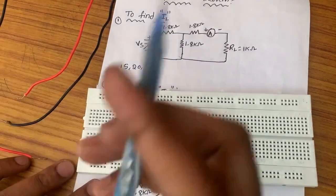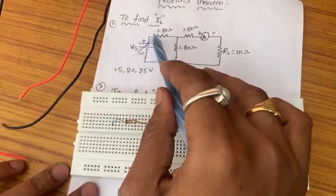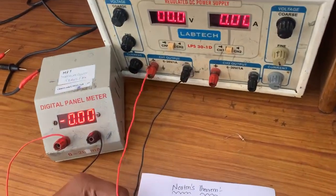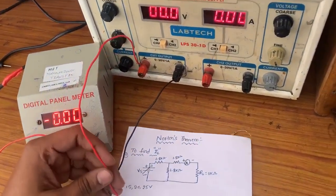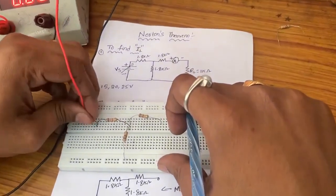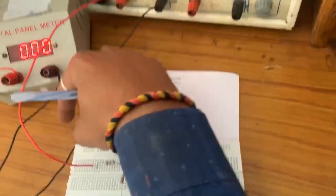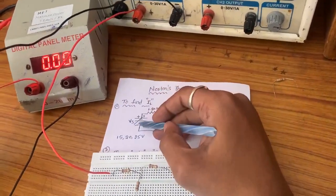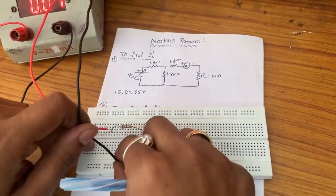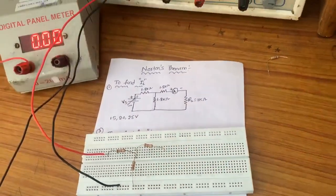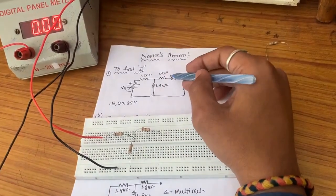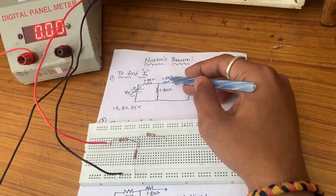Now, the RPS positive is connected to the 1.8 kilo ohm first terminal. Next, RPS negative is connected to ground. Then RPS positive is also connected to the 1.8 kilo ohm second terminal — as both are connected, we should connect vertically.